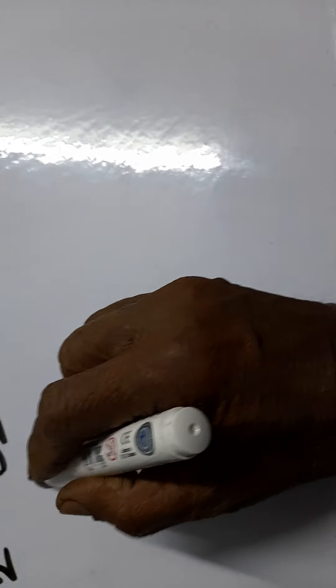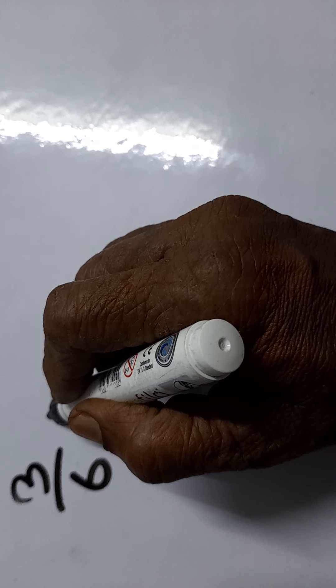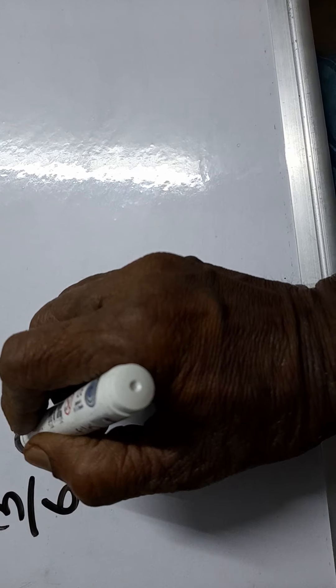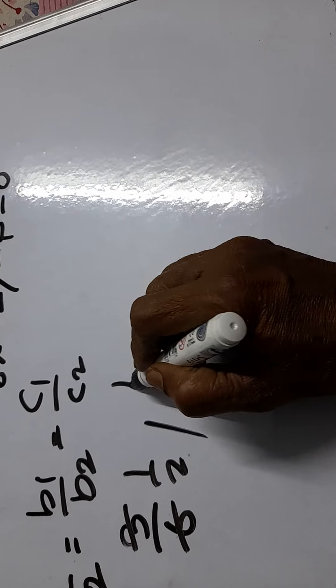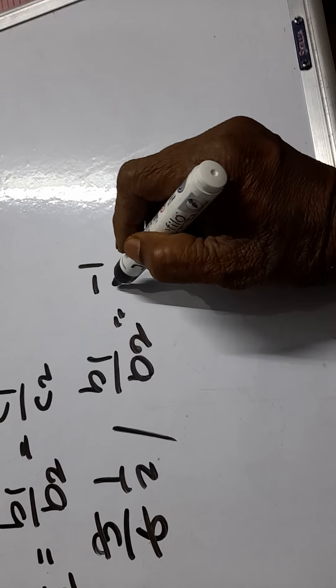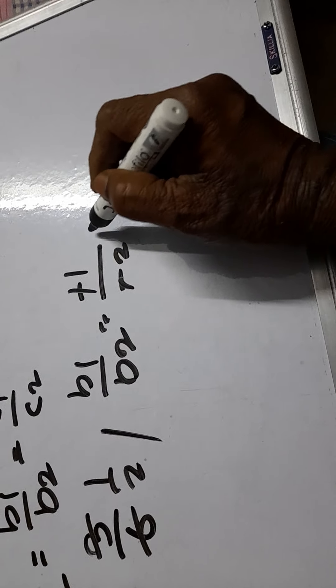So A1 by A2 is 3 by 6 which equals 1 by 2. Again, B1 by B2 is minus 1 by minus 2 and that is 1 by 2.